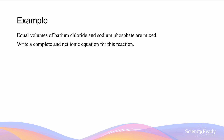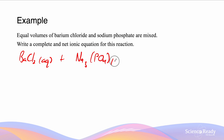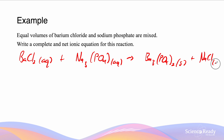In this example, equal volumes of barium chloride and sodium phosphate are mixed. Write a complete and net ionic equation for this reaction. First we write the neutral species equation: BaCl2 (aqueous) plus Na3PO4 (aqueous) forms barium phosphate Ba3(PO4)2 (solid) plus NaCl (aqueous). Barium phosphate is a solid because it is an insoluble salt. Balancing the equation, we place a 3 in front of BaCl2, a 6 in front of NaCl, and a 2 in front of Na3PO4, and the equation is now balanced.